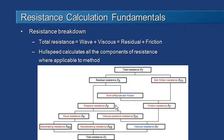Let's step back and recall some of the fundamentals of resistance calculation. Resistance can be broken down into wave and viscous components, or alternatively residual and friction components. Starting at the top of this chart with total resistance, we can break that down into residual resistance which is based on the shape of the vessel and the pressure field in the fluid around the vessel, and skin friction resistance which is due to the friction of fluid flowing over the hull's surface area.